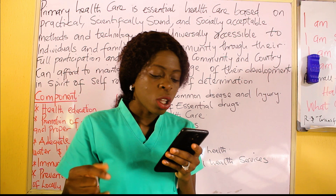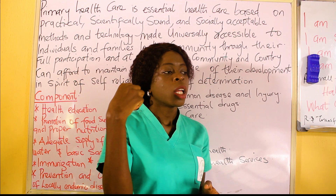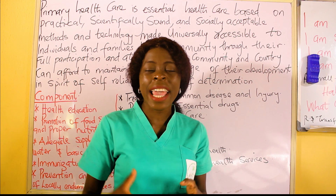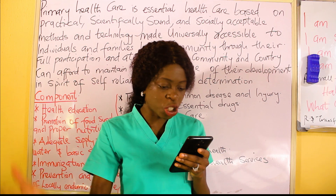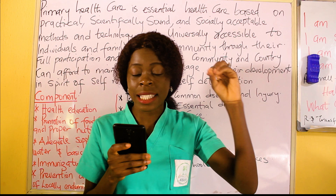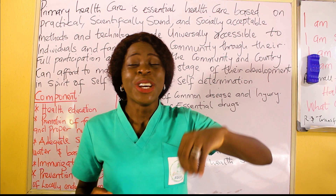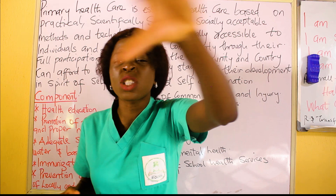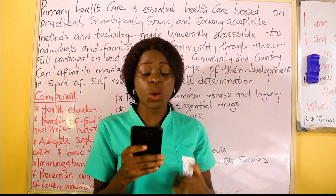Primary health care also integrates health into other sectors — not just health, but also farming, water supply, food, and even road infrastructure. Everything is incorporated. Another objective is to organize health services around people's needs and expectations. When a community is suffering from cholera, you don't focus on malaria. You organize care according to the specific needs of that population.